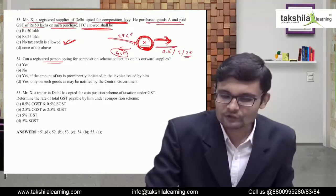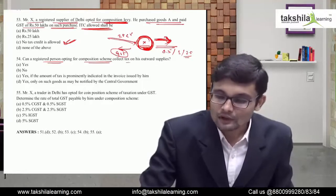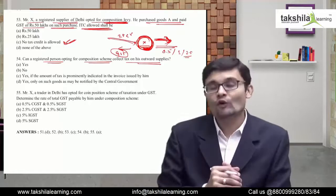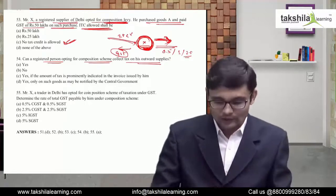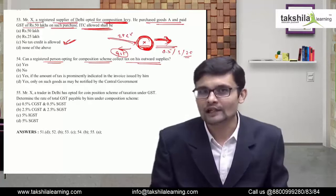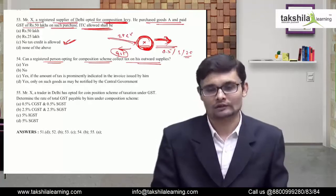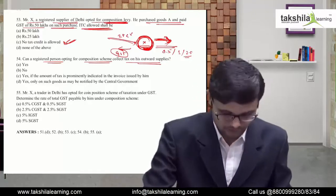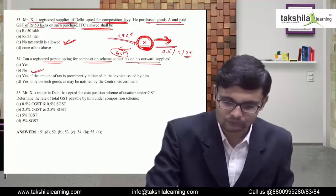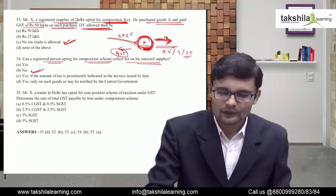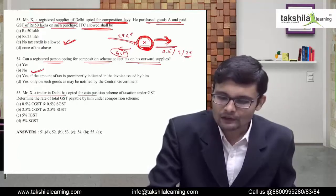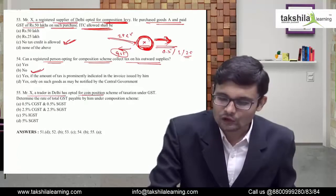Can a registered person opting for the composition scheme collect tax on outward supplies? Of course not. He has to pay tax on his turnover himself, but he cannot collect any tax from the buyer. No tax can be collected on outward supplies.